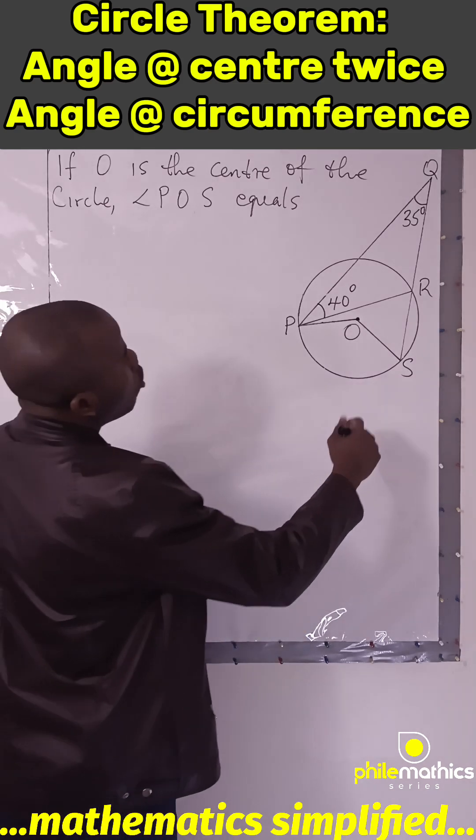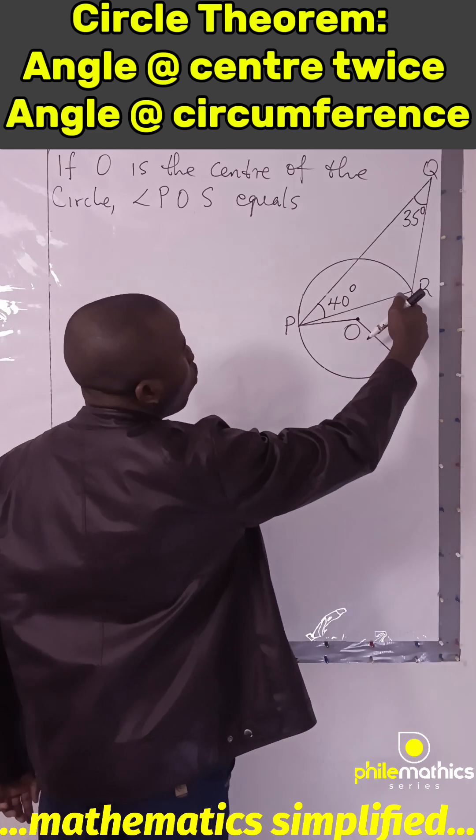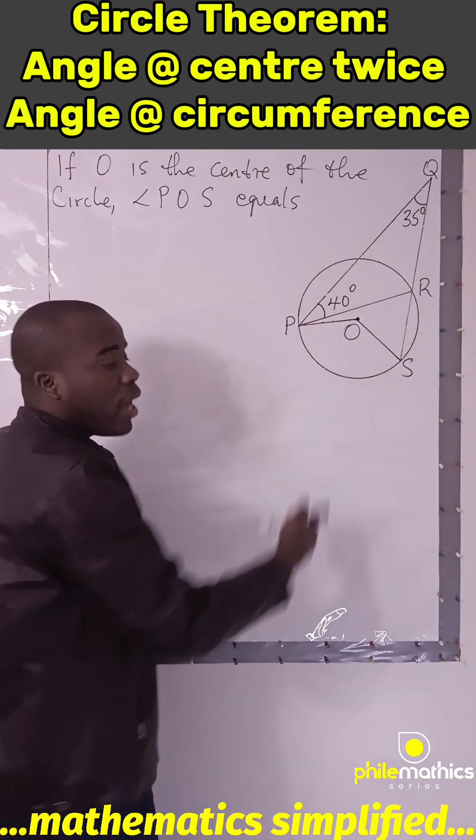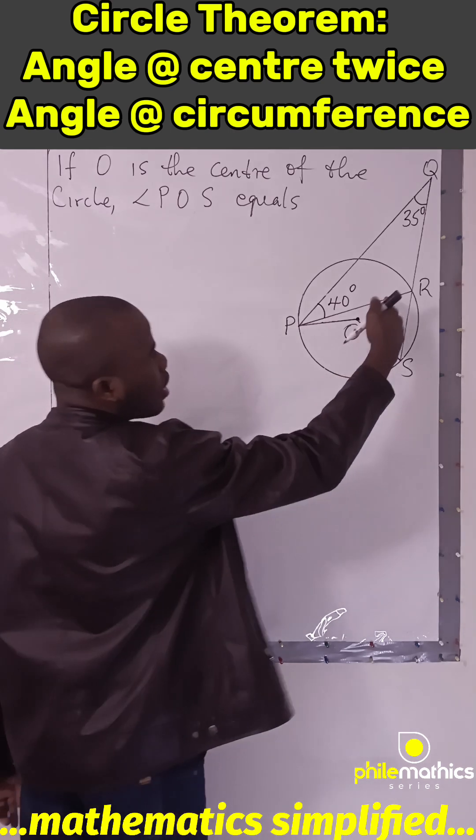Now, we know this angle. If we can get this angle, we can easily get angle POS because angle at center is twice angle at circumference.